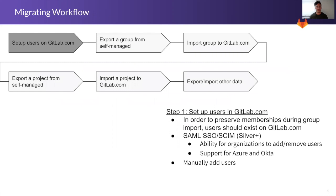I've created a six-step high-level process of what a migration workflow may look like. In step one, you'll need to set up users on GitLab.com first. This helps preserve memberships during the group import — these users should exist on GitLab.com beforehand. You can either manually add users or take the recommended approach of using SSO and SCIM with support from Azure or Okta.